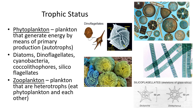For trophic status, we start with phytoplankton — plankton that photosynthesize and generate their own energy. These include diatoms, dinoflagellates, cyanobacteria, coccolithophores, and silicoflagellates. On the diagram: diatoms are top right, dinoflagellates top left, silicoflagellates bottom right, cyanobacteria right middle, and coccolithophores bottom left. Those are your phytoplankton.